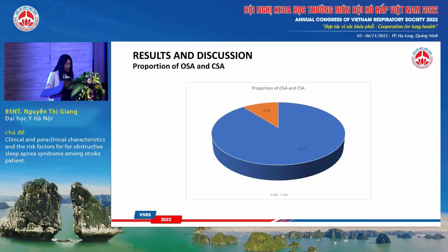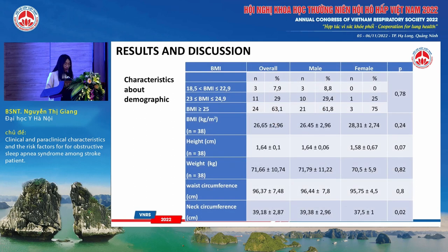Of the 38 stroke patients included in the study, there were 34 patients with obstructive sleep apnea syndrome and 4 patients with central sleep apnea syndrome. The cessation of breathing occurred in one patient with moderate stroke. In our study, the average BMI of the patients was 26.65, of which 63.1% had BMI above 25.